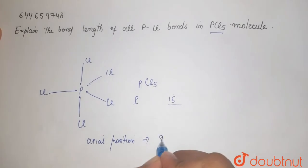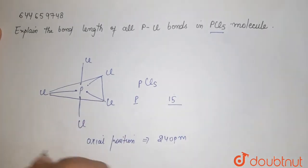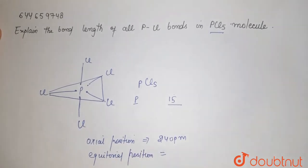And the bond which is lying over here, this is known as your equatorial position. Its bond length is less, that is 202 picometer.